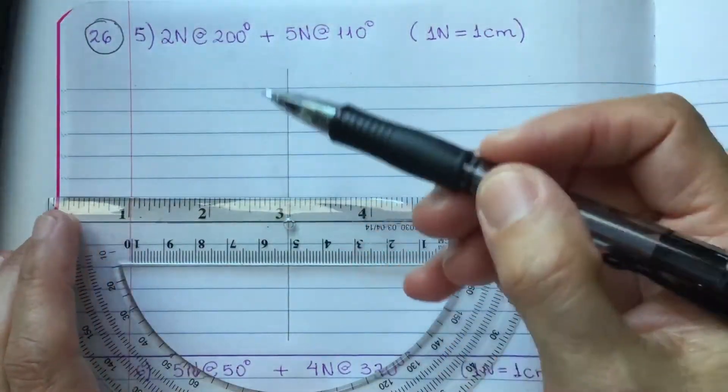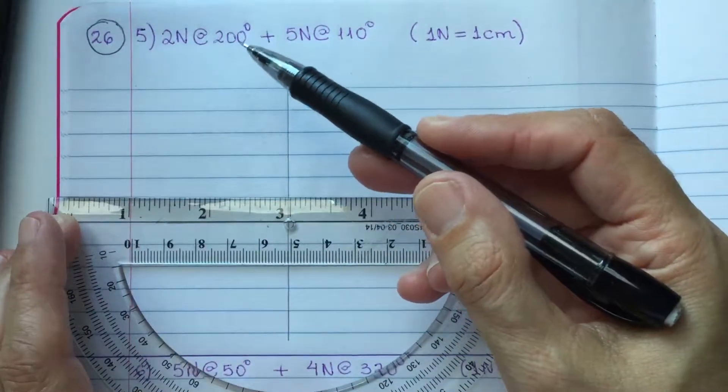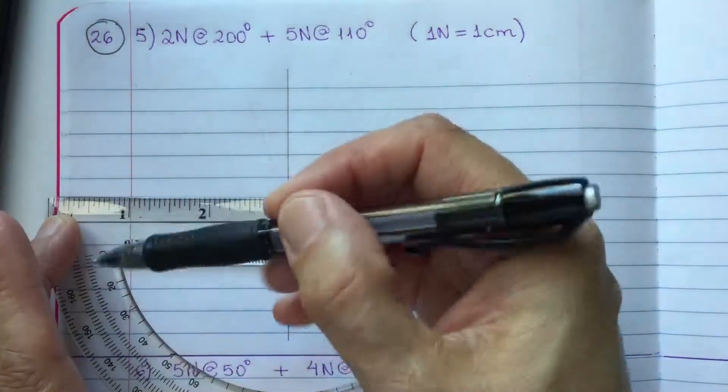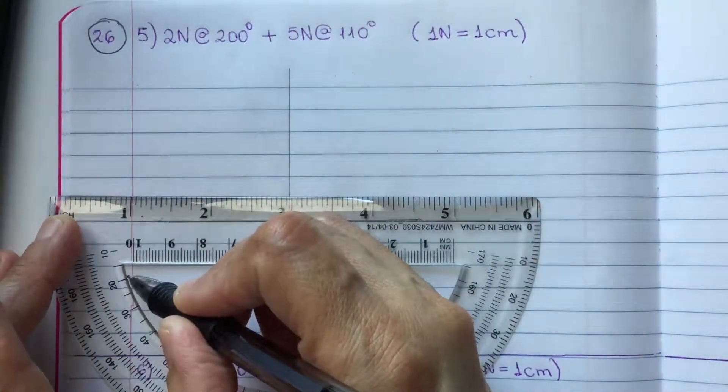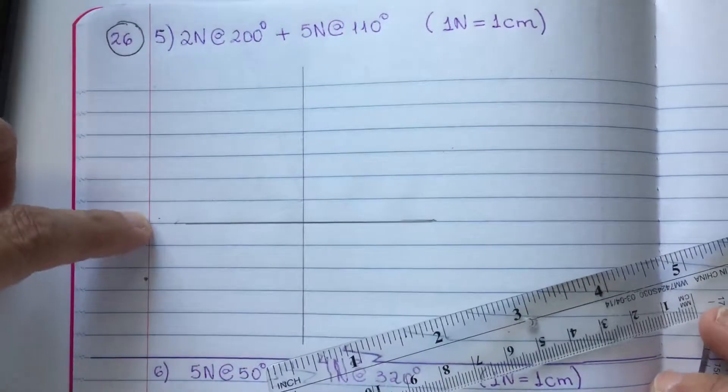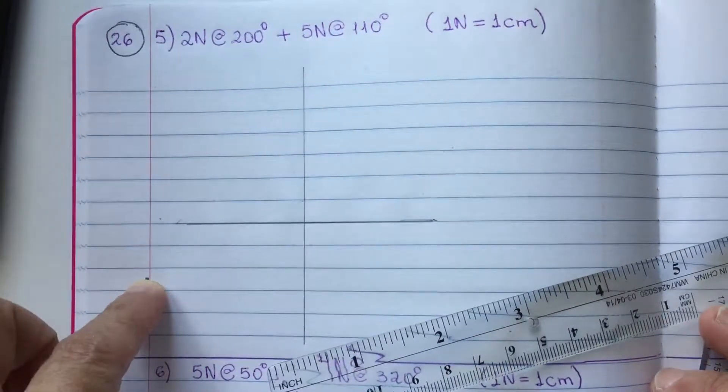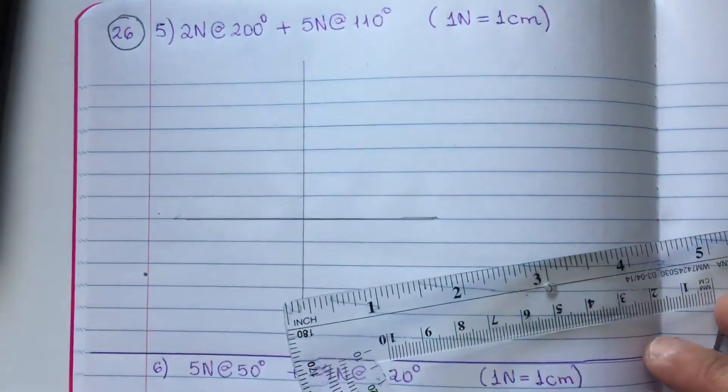Then, you need to add 20 degrees on this protractor right here. Because 180 plus 20 degrees, we have 200 degrees.